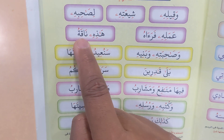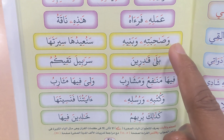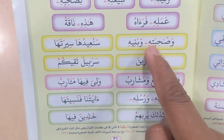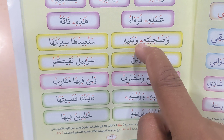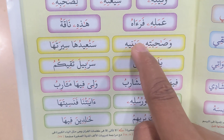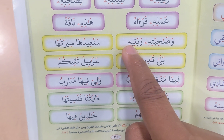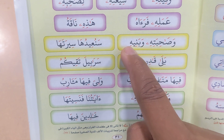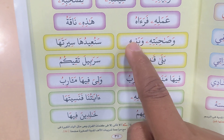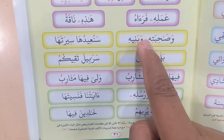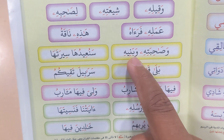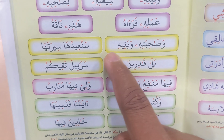Hadihi. Wa sahibatihi — you see here the Maddiya Sagheera is pulling on the Ha Kasra. Wa banihi — this one doesn't have any Maddiya Sagheera, so you don't pull on it. You say Wa banihi.